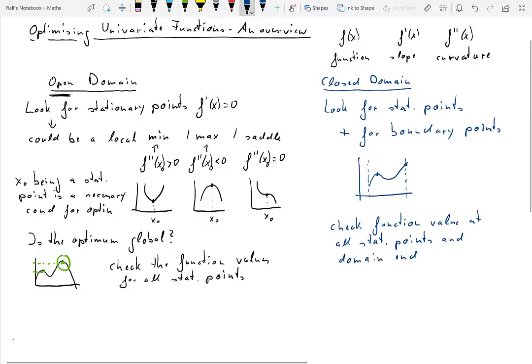And you need to look at all the domain end points or boundary points, and you compare the function value for all of these and then decide where your maximum is to find the global maximum of that function on that particular closed domain.